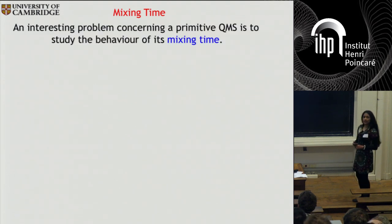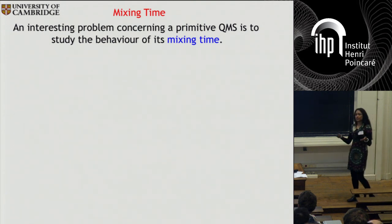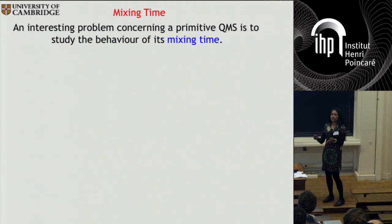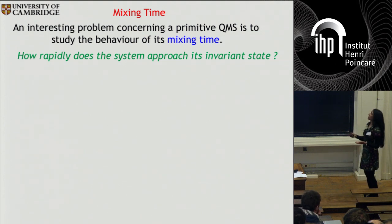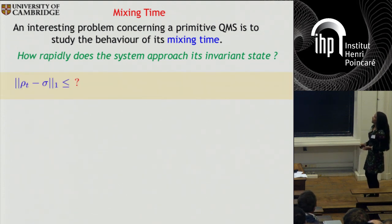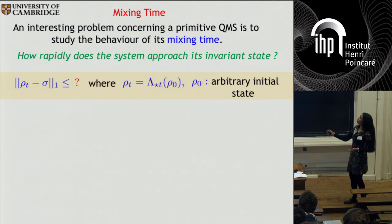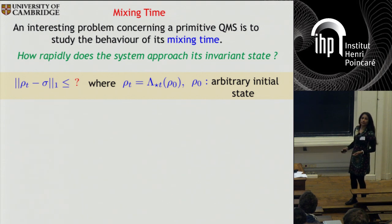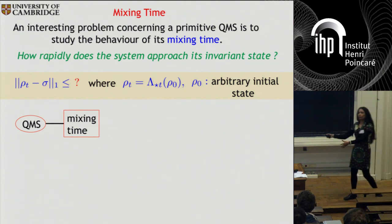An interesting problem concerning a primitive quantum Markov semigroup is the study of the behavior of its mixing time — the time needed for the system to approach its invariant state. The question you ask is: how rapidly does the system approach sigma? Typically what you're looking for are upper bounds on this quantity, where sigma is the invariant state and rho t is the state you get by evolving any arbitrary initial state.